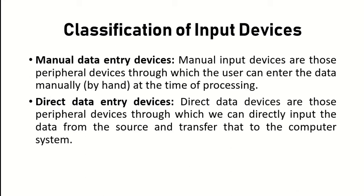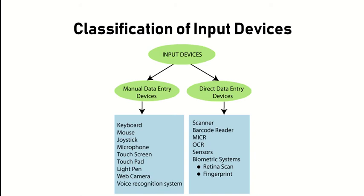In manual input devices, you provide data by hand during processing. In direct input devices, data is transferred directly to the computer system. Examples of manual input devices include keyboard, mouse, joystick, microphone, touch screen, touchpad, light pen, webcam, and voice recognition systems. Direct data entry devices include scanner, barcode reader, MICR, OCR, and sensors.